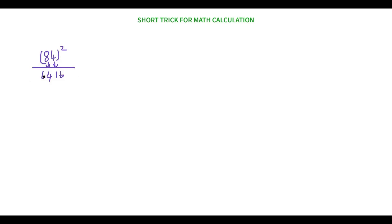Now the second step: multiply the three numbers — eight times four times two. Eight times four is 32, and 32 times two is 64. Be careful: we don't write this 64 in the ones place — we write it in the tens and hundreds place below the first result. Then the third step is to add them up. We get six, then five, then six plus four is ten with a carry of one, giving seven. Our final answer is 7056.